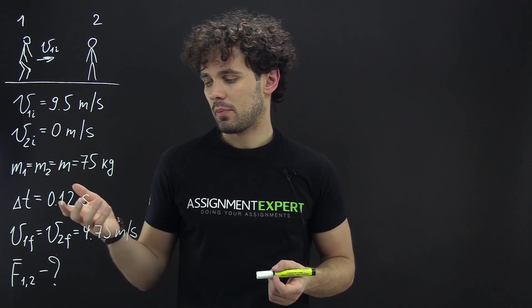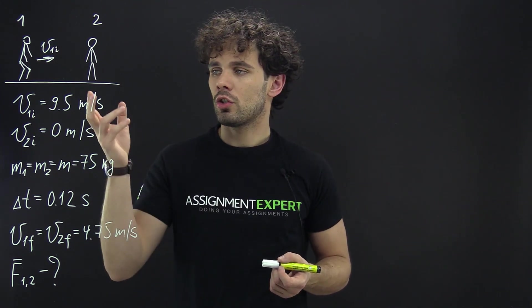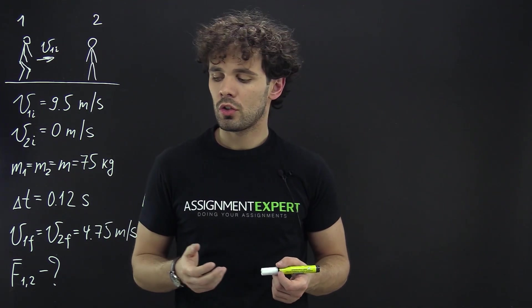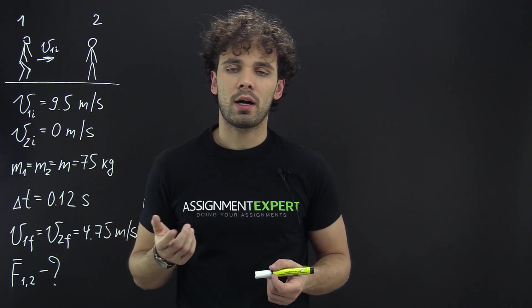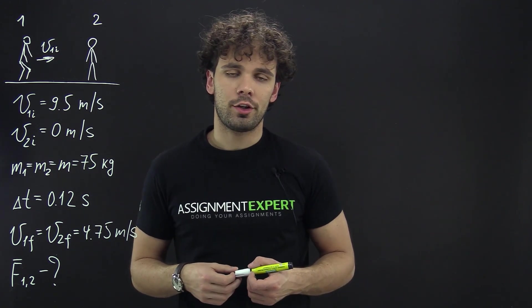This collision takes place during this short period of time and after the collision two skaters move as a single unit with a speed 4.75 meters per second. Let's find the average forces experienced by each skater.